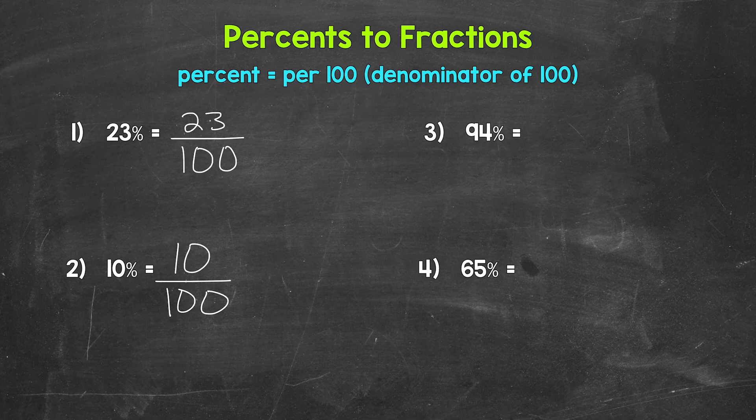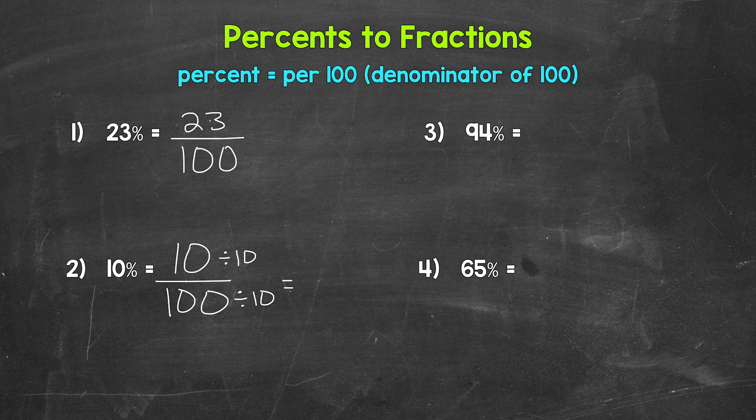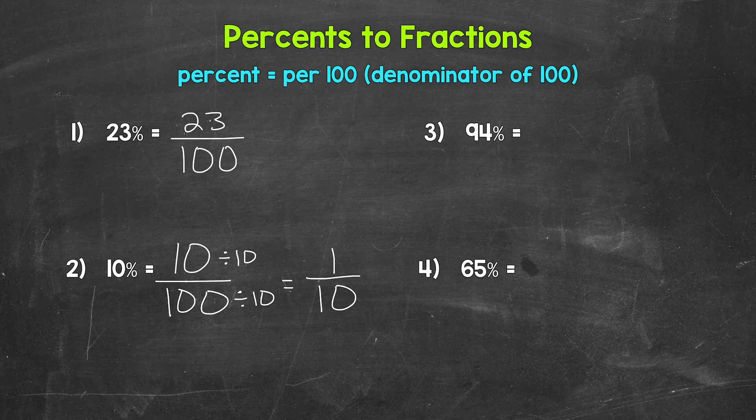We have a greatest common factor of 10 that we can divide the numerator and denominator by. 10 divided by 10 gives us one, and then 100 divided by 10 gives us 10. So we get one over 10, one tenth.